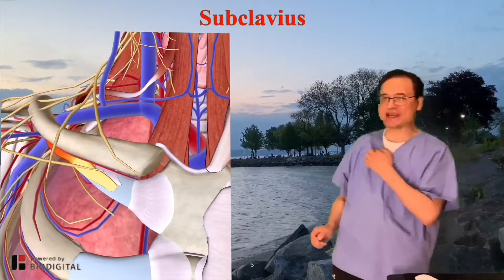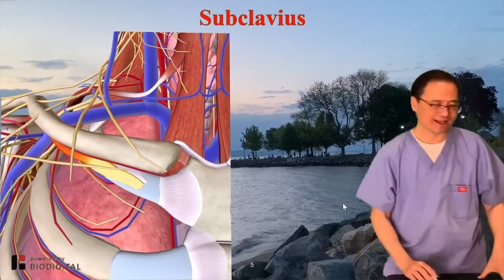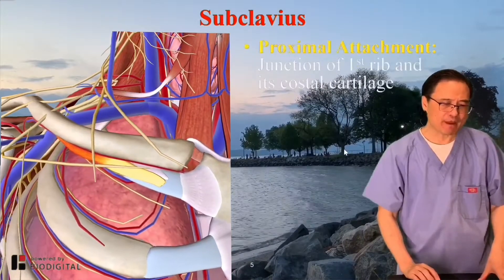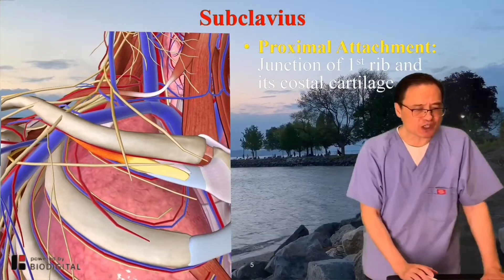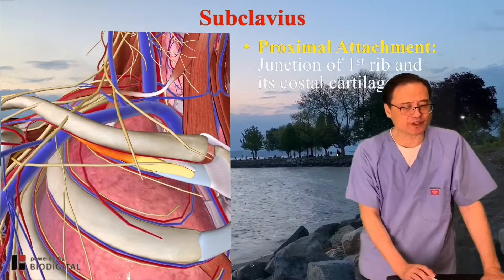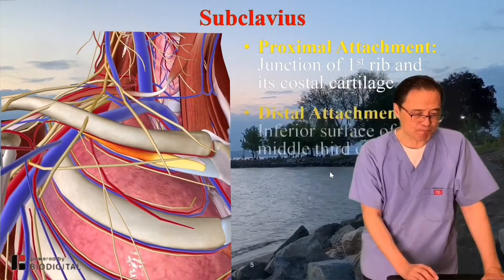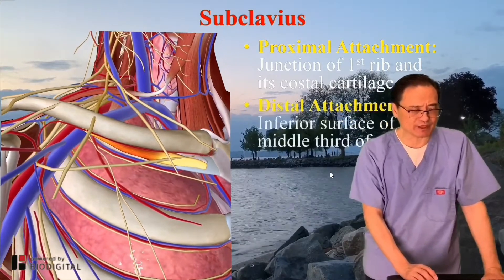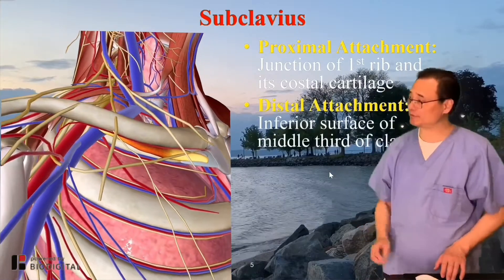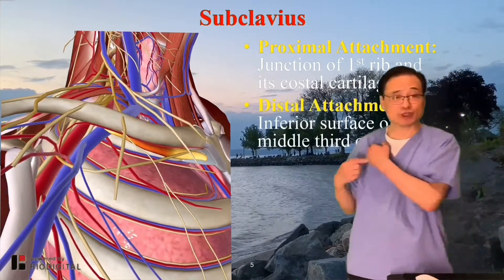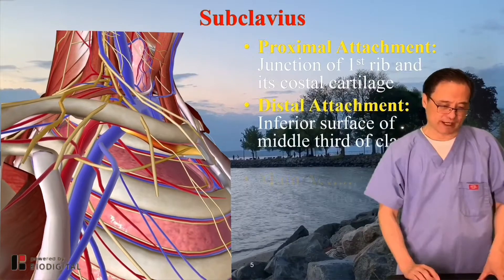Subclavius, right under the clavicle. You can see the proximal attachment at the junction of the first rib and its costal cartilage. Distal attachment: inferior surface of the middle third of the clavicle — right in the middle, actually.